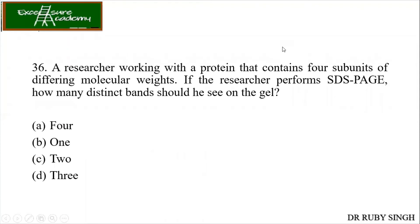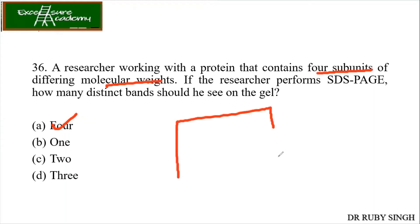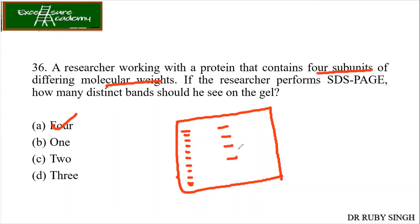A researcher is working with a protein that contains four subunits of differing molecular weights. If the researcher performs SDS-PAGE, how many distinct bands can he see on the gel? The answer is four, because the question already states it has four subunits each with different molecular weight. When you run SDS-PAGE, you are going to see different bands representing each differing molecular weight. If the four subunits had similar molecular weight, you would see only a single band.